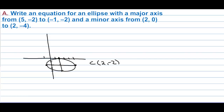We can start writing the equation: (x minus 2) squared over something, plus (y plus 2) squared over something, is equal to 1. What we need is the a and the b.